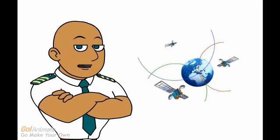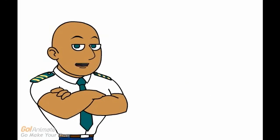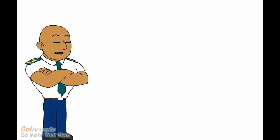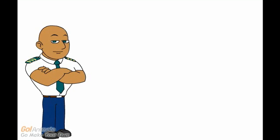Three satellites provide the intersection point and the fourth is used to check that the positioning is accurate. Originally there were 24 satellites but since 2010 there are 32 satellites orbiting the Earth at approximately 20,000 kilometers above the surface.